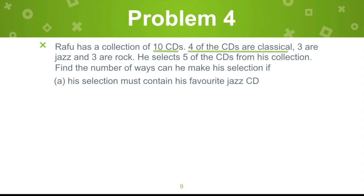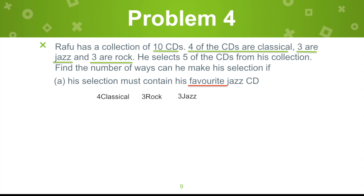So we have 4 classical, 3 jazz, and 3 rock, coming up with possibilities in a table format. The condition for letter A is that the selection must contain a favorite jazz CD. Even though we don't know the specific one from the 3 jazz CDs, we know there is a particular one that is Raffo's favorite — that can be represented as 1. He needs to select 5, so the remaining 4 will come from either classical or rock.